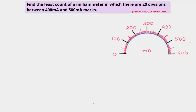I have drawn a milli ammeter here. As per the question, there are 20 divisions between the 400 milli ampere and 500 milli ampere marks. This is our 400 milli ampere mark and this is our 500 milli ampere mark. In between these two marks there are 20 divisions — each line is a division, so there are 20 such lines.